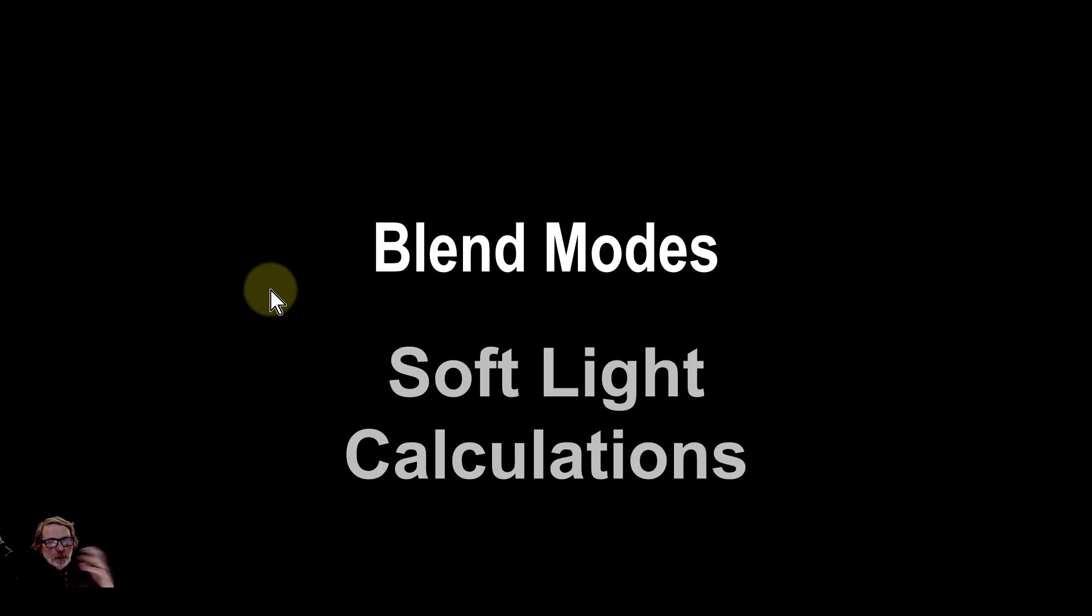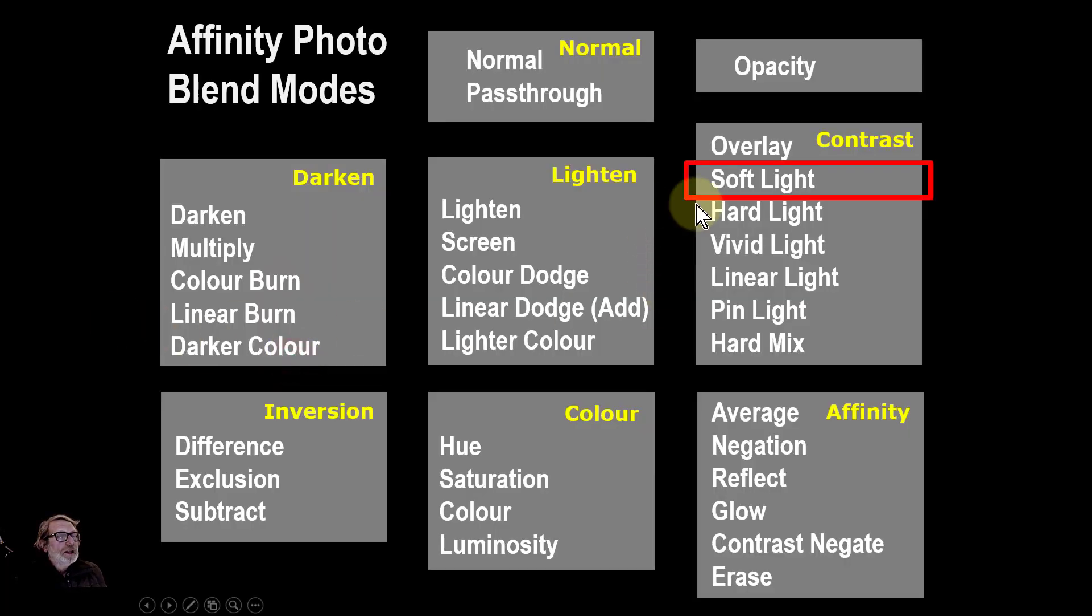If you want to see all of them, go to the Wikipedia page on blend modes and there's lots of math in there that will delight you no doubt. So let's have a look. Soft Light then is the second in the contrast group, which by and large means making the lights lighter and the darks darker.